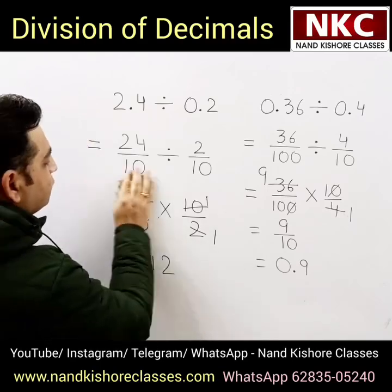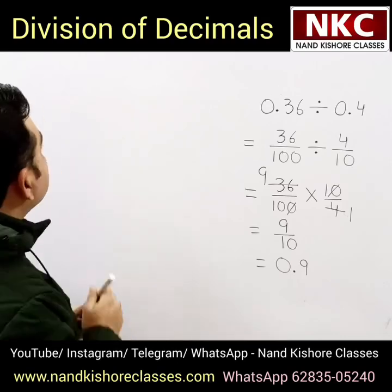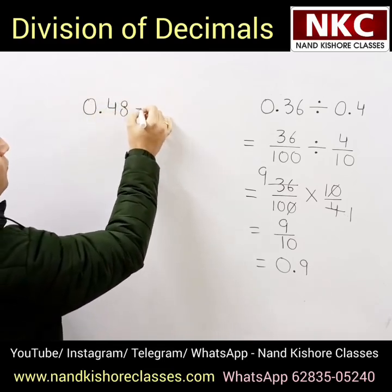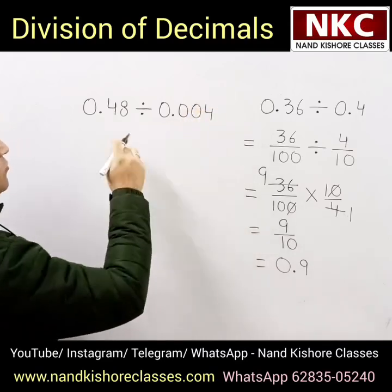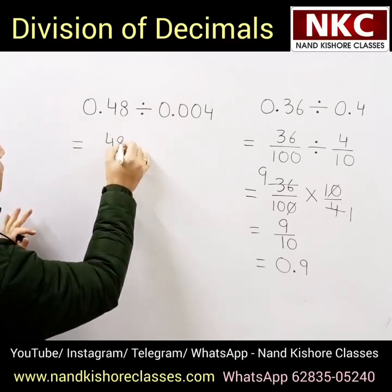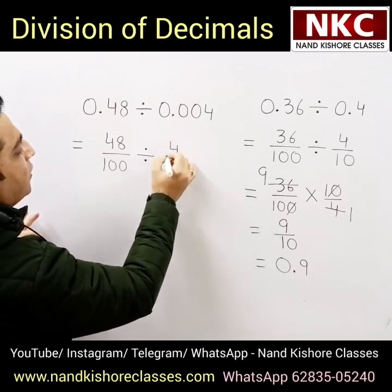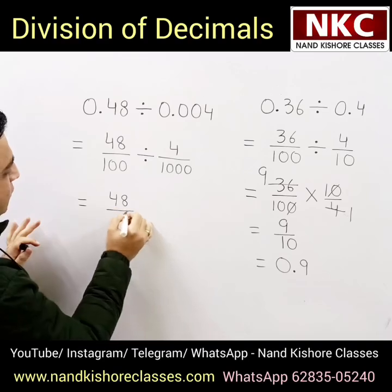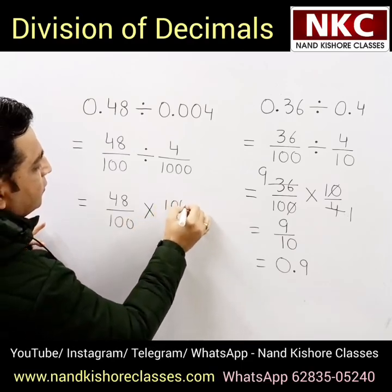Exactly the same method. I am going to take one more example so that your concept is completely clear. Let's suppose we want to divide 0.48 by 0.004. Same process we are going to follow. 0.48 can be written as 48 over 100. Then 0.004 can be written as 4 over 1000. Following the same procedure, change the division sign to multiplication and it becomes 1000 over 4.